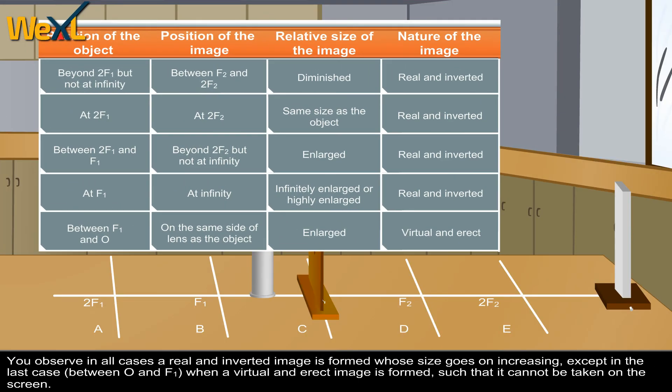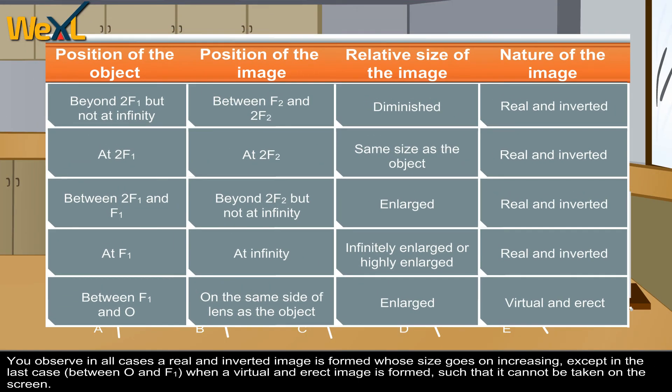You observe in all cases a real and inverted image is formed whose size goes on increasing, except in the last case between O and F1, when a virtual and erect image is formed such that it cannot be taken on the screen.